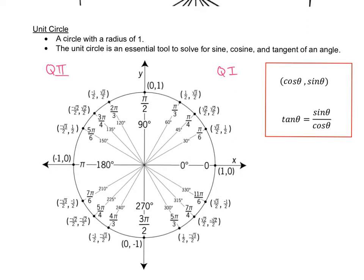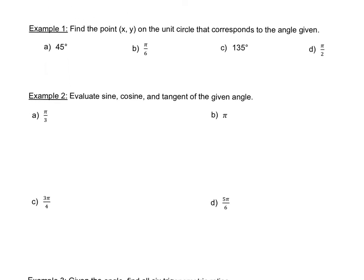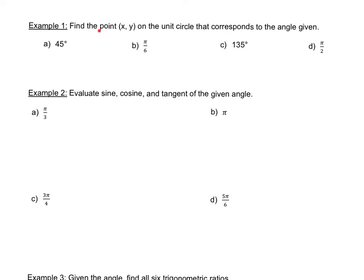Let's get started with example one. They want you to find the coordinate points — x and y — on the unit circle that corresponds to the given angle. The angle could be in degrees or radians, and you just have to find the coordinate that associates with it. You'll definitely have to use the unit circle, so you'll need to flip back and forth.